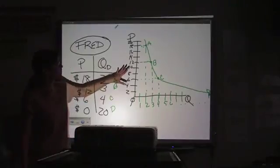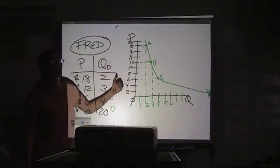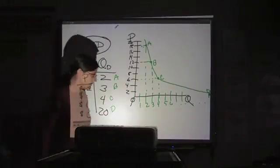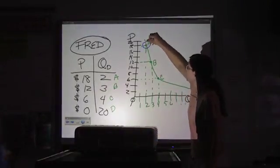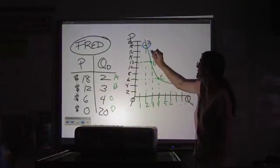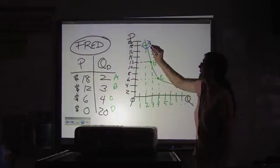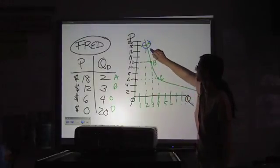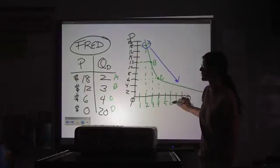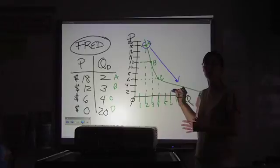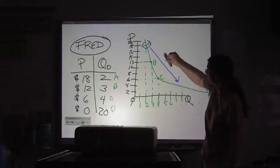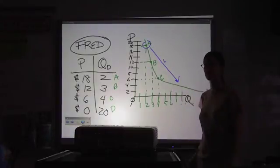So what we see with a demand curve is a downward slope. Because at higher prices, people tend to want less. At lower prices, they want more. So what you see is a curve with a slope that trends downward, or it is negative, sloping like this.